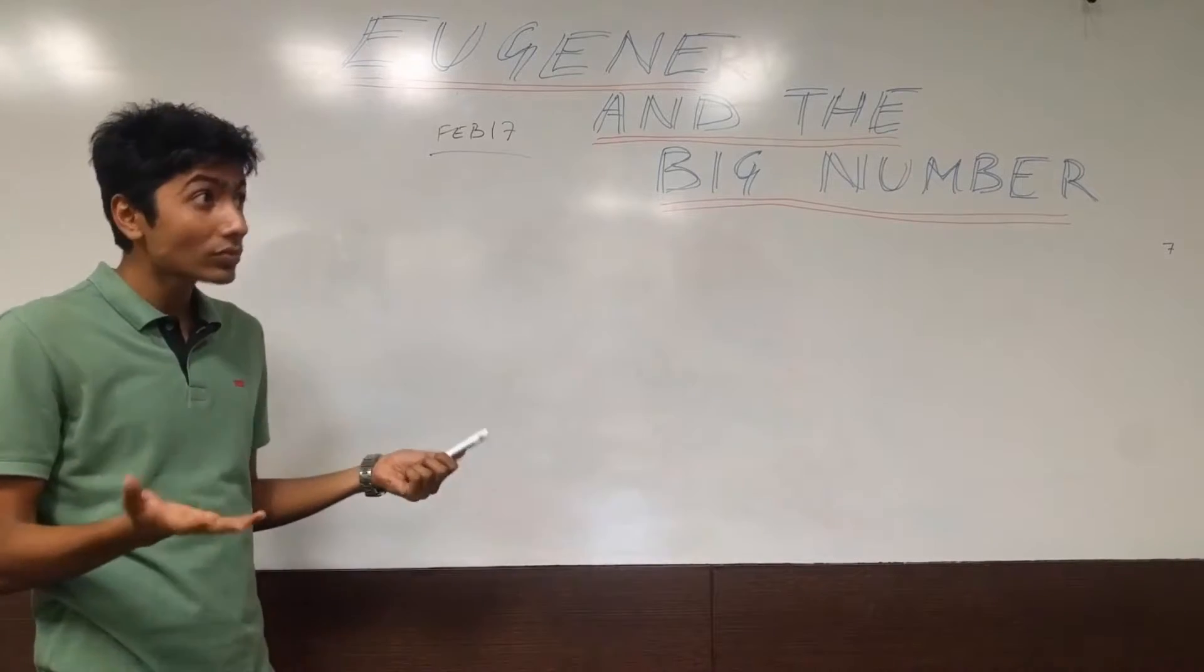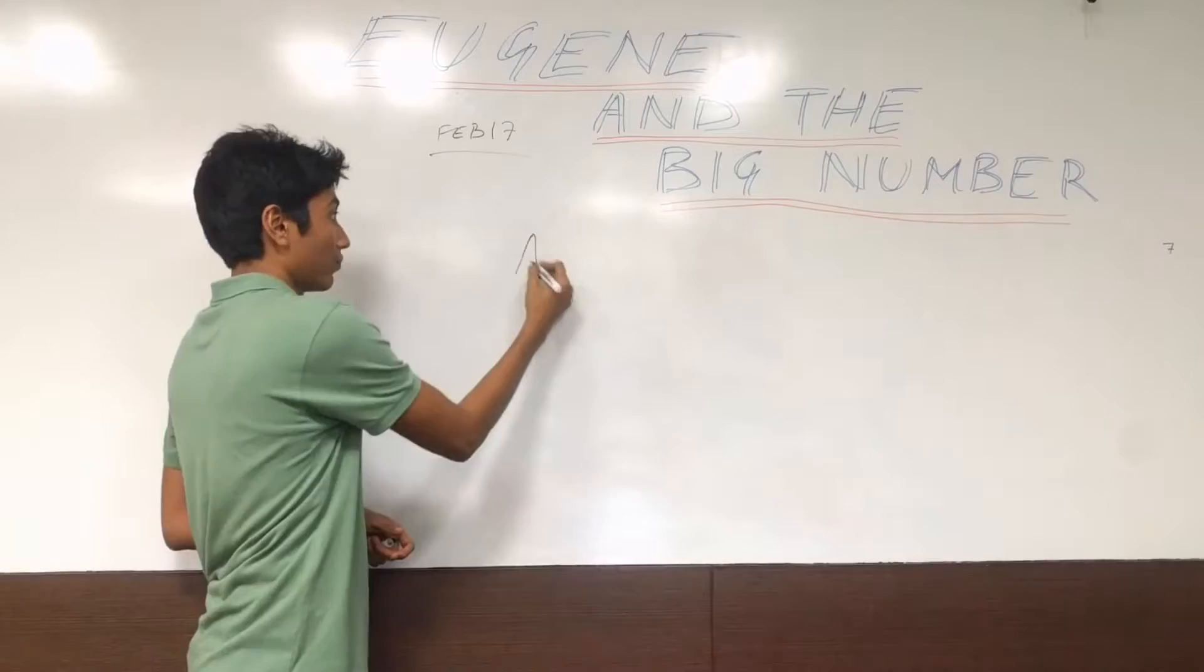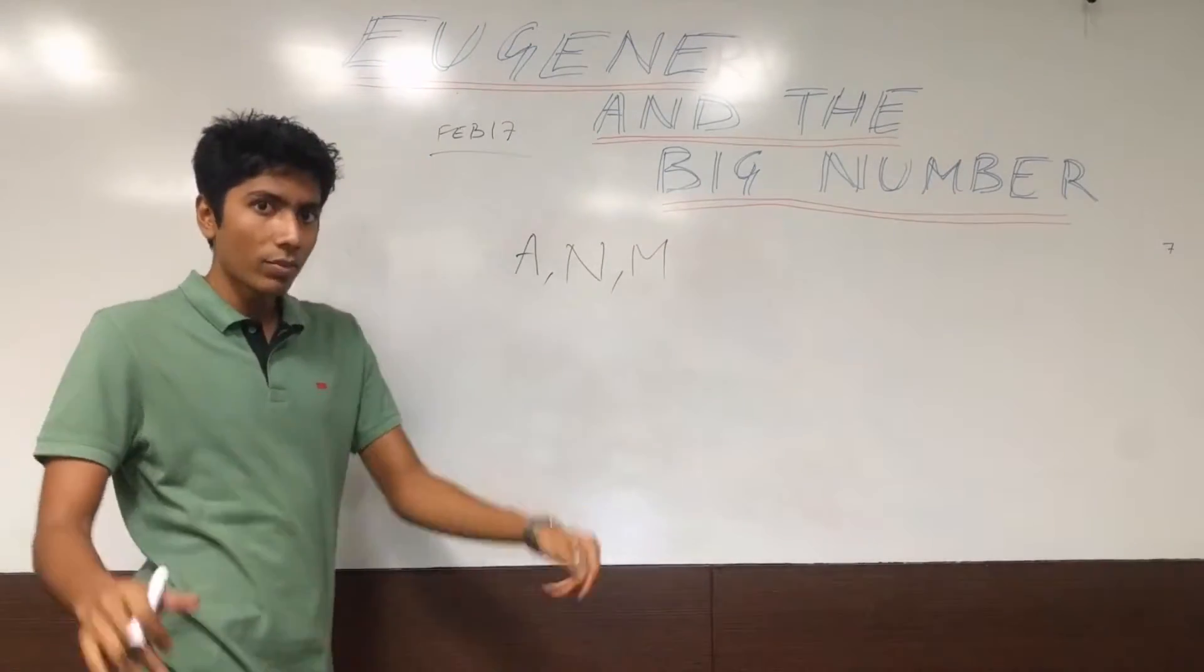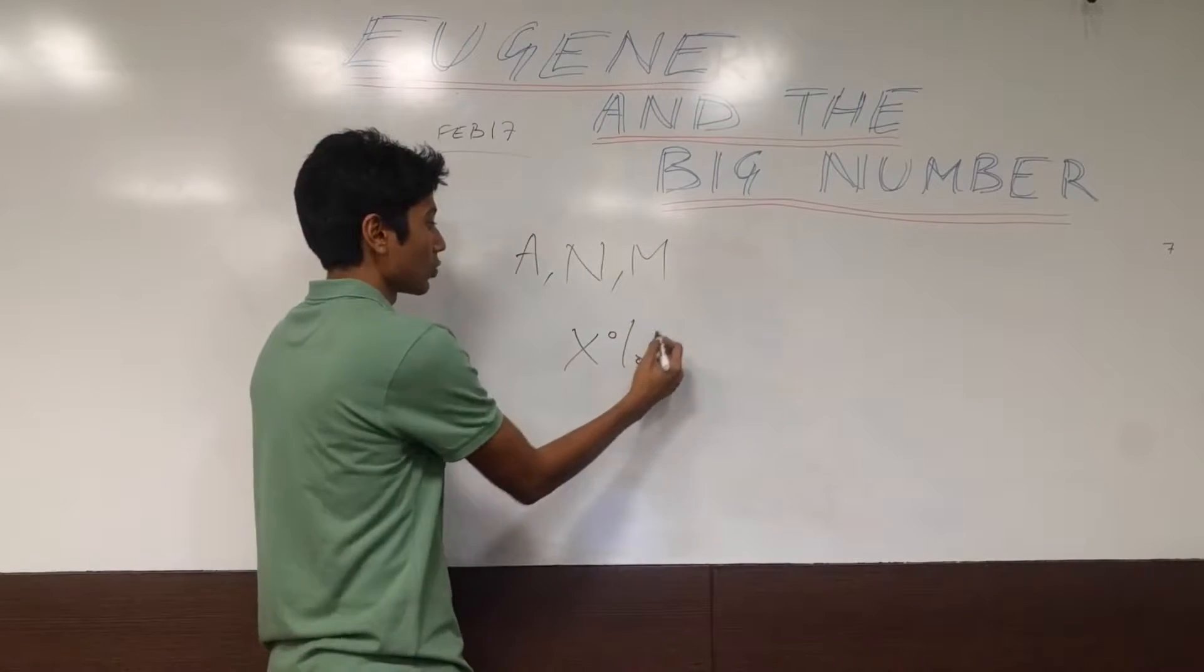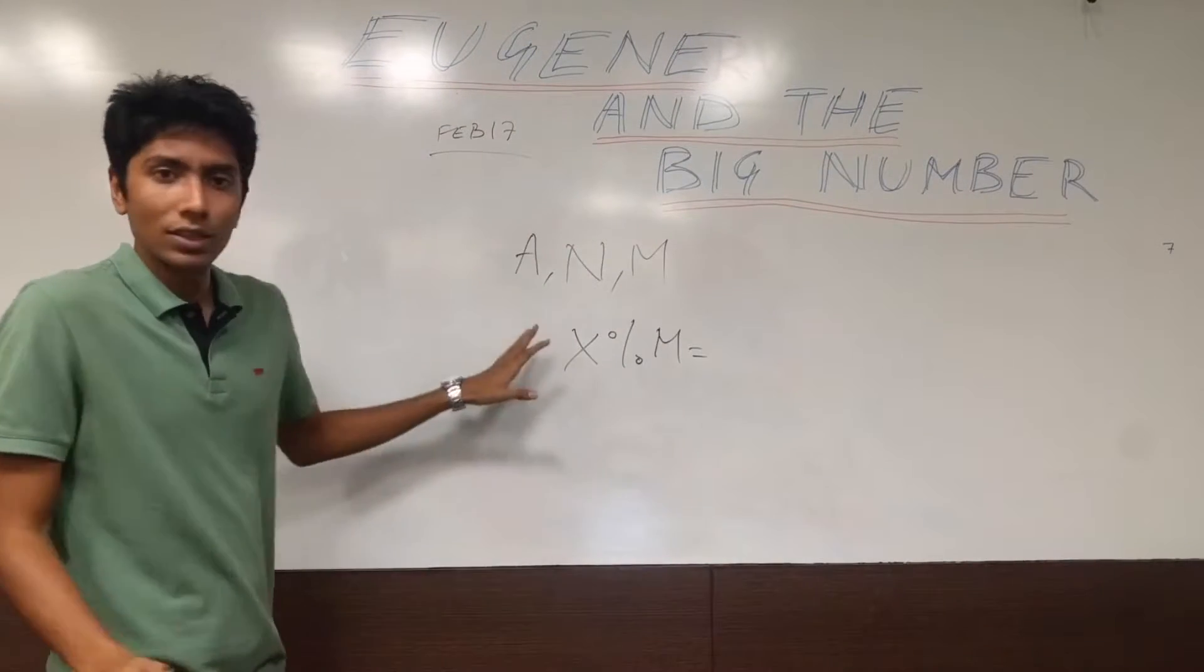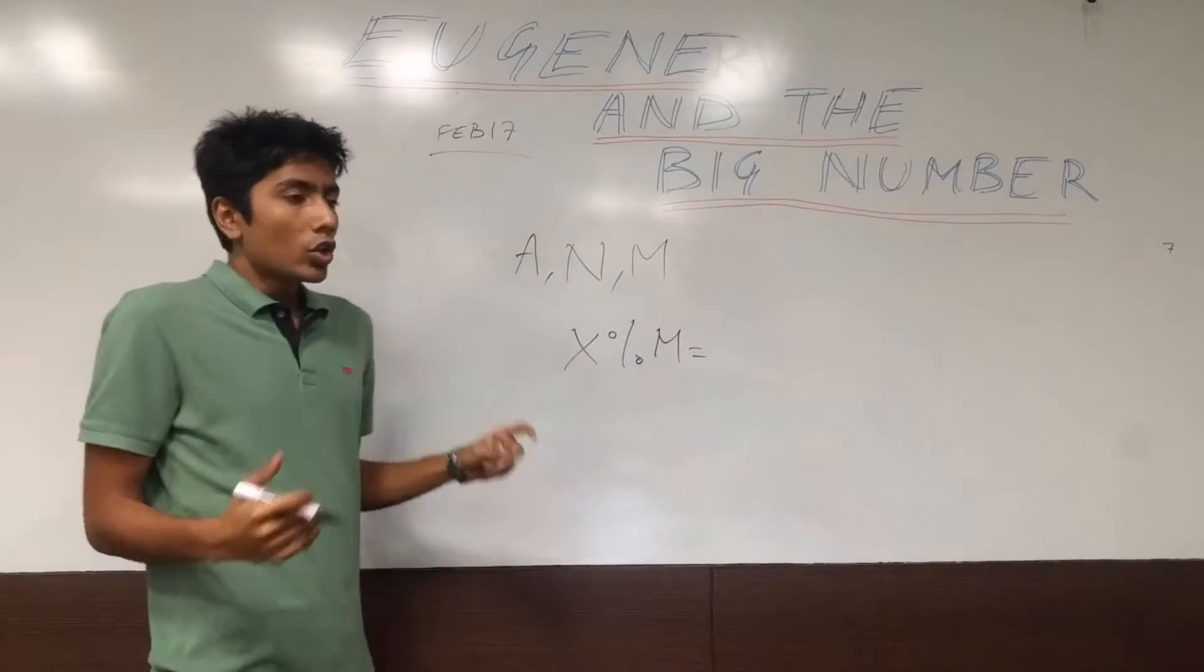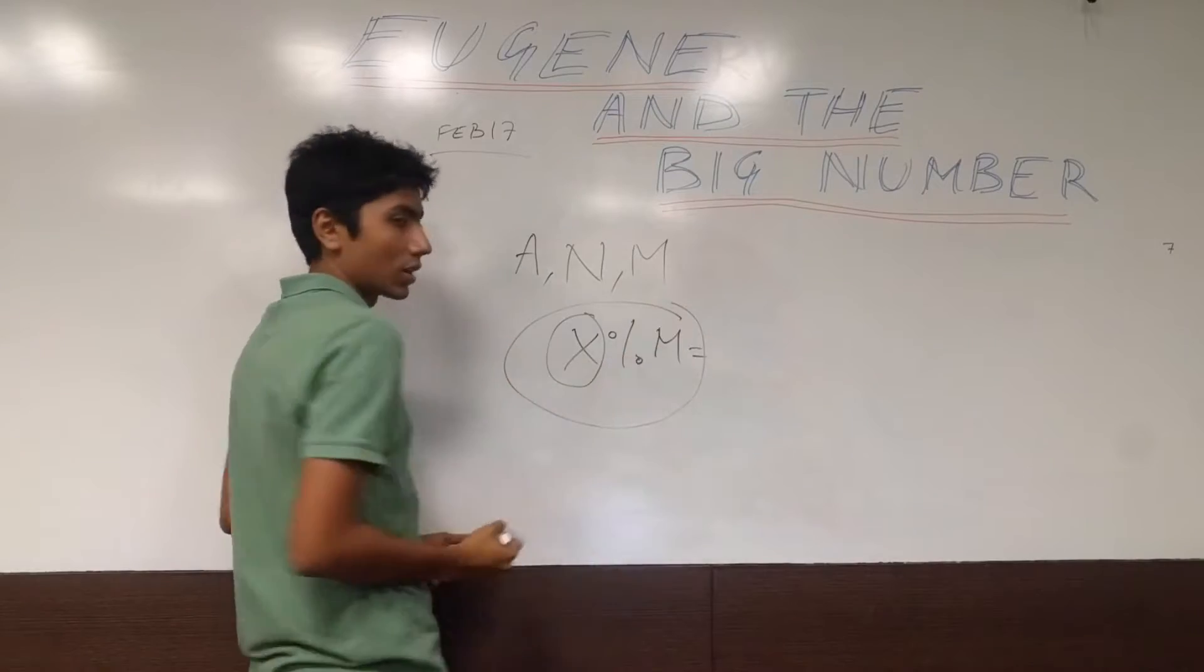They gave us some really interesting variables to work with. There's a, and then there was n which is quite rare as a variable, m, and the most rare variable ever, x. x mod m is what you need to calculate. Basically you have been given 3 numbers a, n, m. You need to calculate by yourself what x is and then this final result.